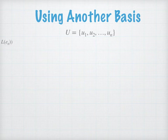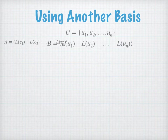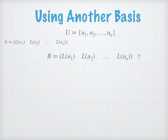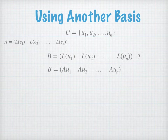Just as we used L(e1), L(e2), L(en) to find A, we can take L(u1), L(u2), L(un) to find B as a matrix representation for the same linear transformation but with respect to the different basis. Since L(u1) is the same as A(u1), we can use matrix representation A instead of L.